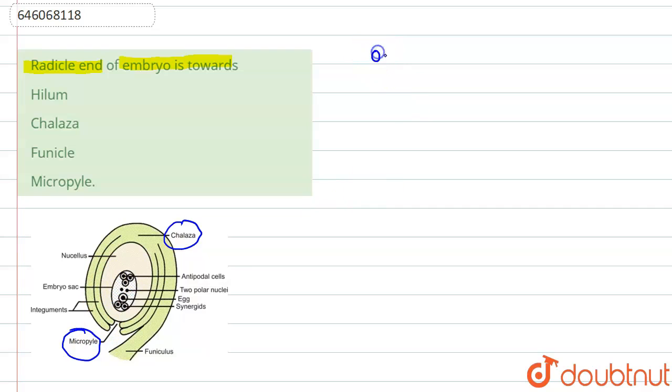An ovule has two indices: one is chalaza and the other is micropylar end. The question asks radicle end of embryo, which means from which end the radicle originates. So the radicle originates from the micropylar end.